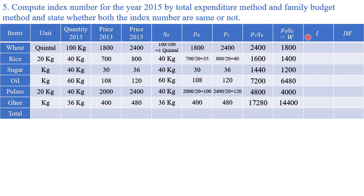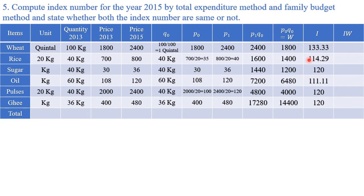Next, calculate individual index numbers I = (current year price / base year price) × 100: 2400/1800×100, 40/35×100, 36/30×100, 120/108×100, 120/100×100, 480/400×100. These are the index numbers for each item. Then multiply each index number I by its weight W (which is p0·q0) to get I×W values. These will be long calculations — write each down carefully.